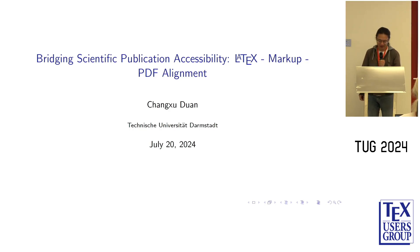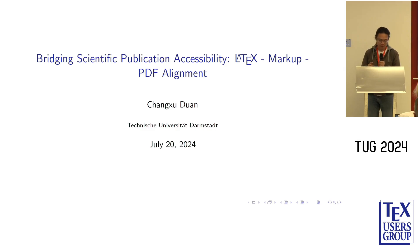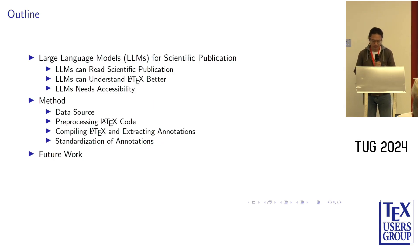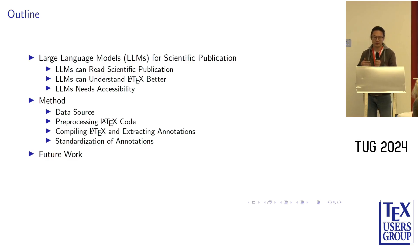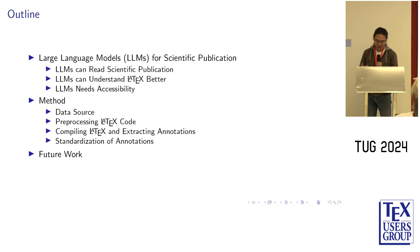Hello, I'm Changxu. Today I want to show a piece of work I did on AlignLytics, PDF, and LaTeX language. In this work, the accessibility is not only for humans, but also more about large language models for scientific publications. We began with showing capabilities of large language models in reading scientific papers, and I will highlight current limitations and explain why it's crucial to make PDF documents more accessible to models. My approach is creating accessibility through colour alignment. So let's start.